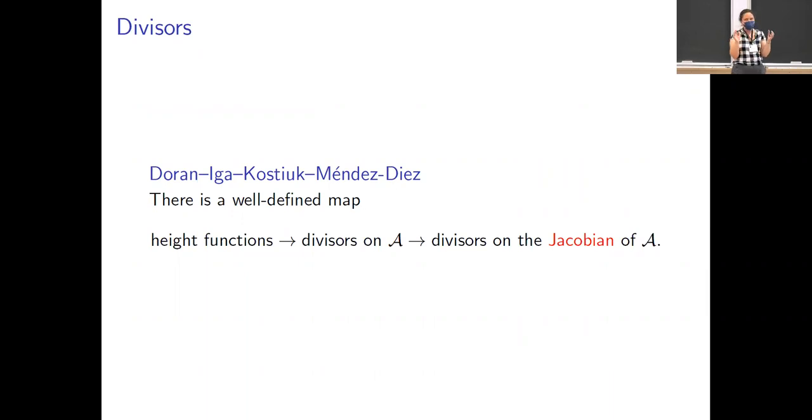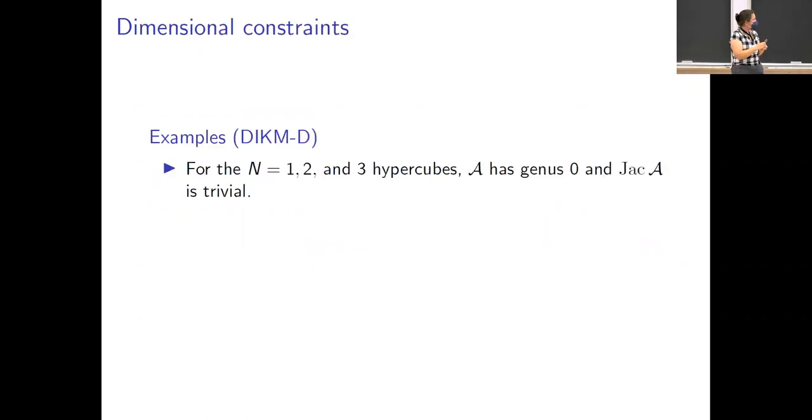Now, there is a well-defined map that starts with a height function and it gives you a divisor on this algebraic curve built in the manner I have just illustrated for you. But that algebraic curve, it might be really high genus. In fact, it probably is really high genus. So we want to simplify a little bit so we can push further to the Jacobian of this curve. You could try to do examples. For the n equals one hypercube, the n equals two hypercube, we saw that the n equals three hypercube just gives us a sphere. So that tells us that we've got a genus zero curve and there isn't any information in the Jacobian. So although we could define corresponding points from height functions, they wouldn't really tell us a lot.